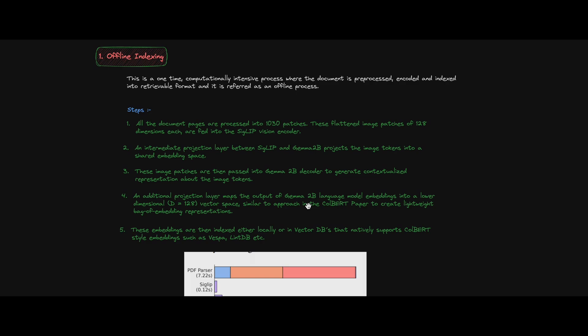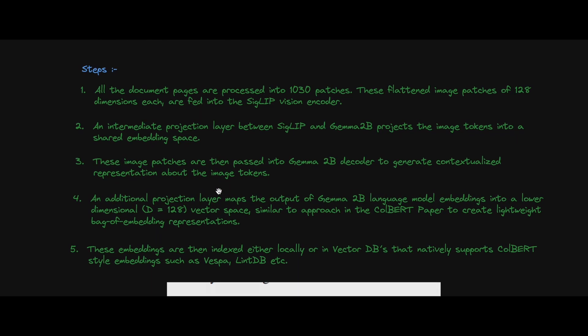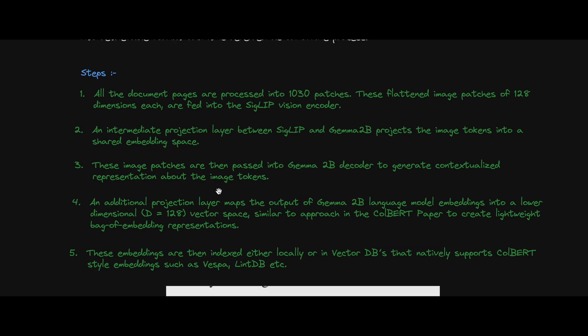In the first step, all document pages are pre-processed into 1030 patches — one page is treated as one image, and that image has 32×32 patches. Each patch is pre-processed, flattened, and stored as a 128-dimensional vector.